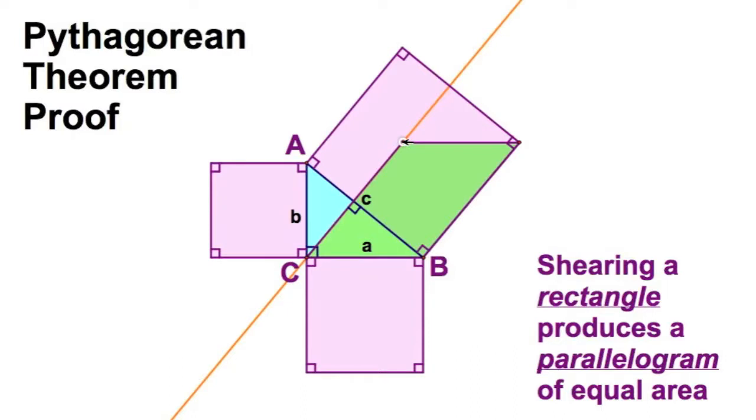Remember, shearing produces another parallelogram, in this case a rectangle, of equal area. So that green—well, that green rectangle there has an equal area here. So you know where this is going.